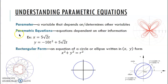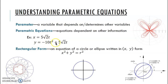A parameter is a variable that depends on or determines other variables. As the Khan Academy video explains, you can find x and y based on another variable — that variable they're based on is your parameter. For example, we can define x as 5√2 times t and y as negative 10t² plus 5√2 times t. In both equations, both x and y are dependent on t, so t is our parameter. If we know t, we can identify the x and y coordinates that go with it.